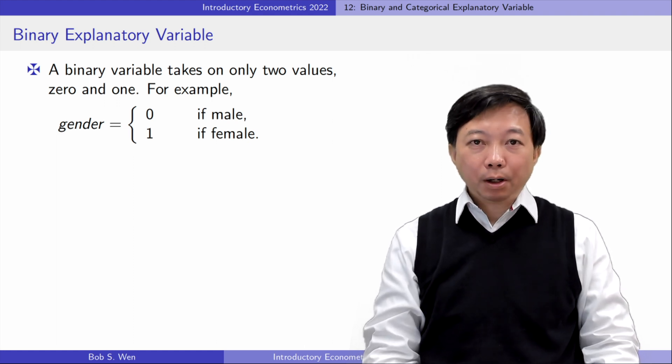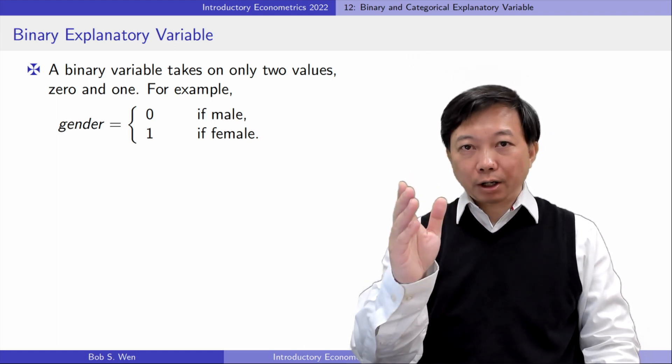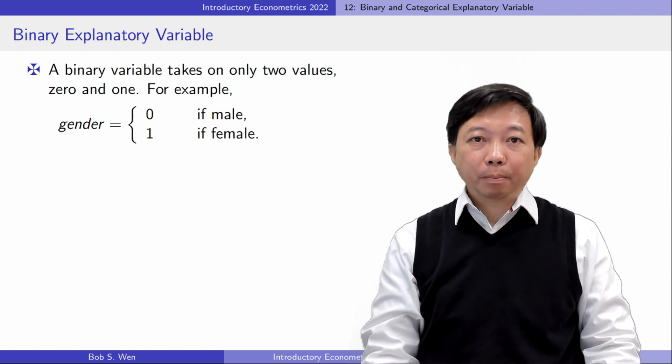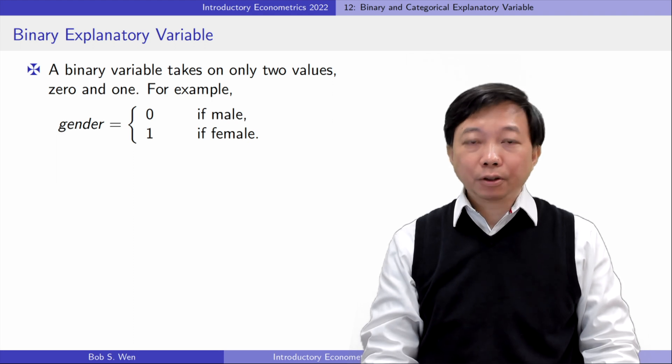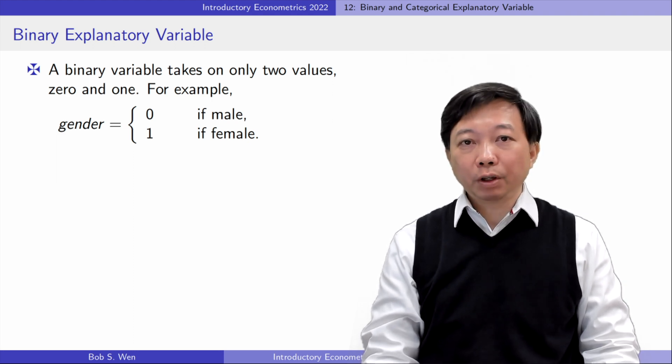For example, the variable gender is a binary variable. It's equal to zero if the individual is male. It is one if the individual is female.